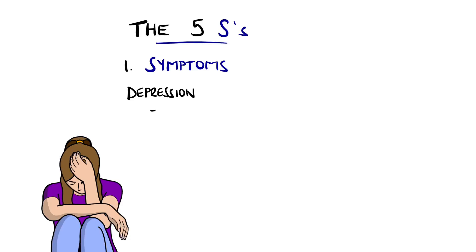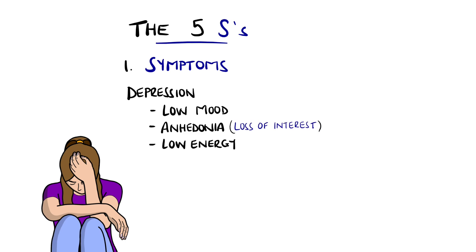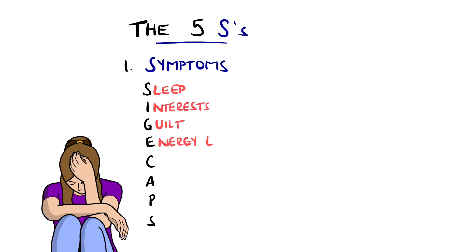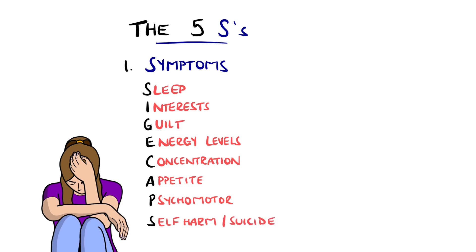Using depression as an example, mood is a core symptom, as is anhedonia and low energy, but there are several others. SIG-ECAPS is a great mnemonic to remember to cover these symptoms, and it can help generally as well. It stands for sleep, interests, feelings of guilt, energy levels, concentration, appetite, psychomotor features, and self-harm or suicide — but we'll get to that later.